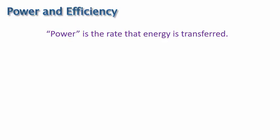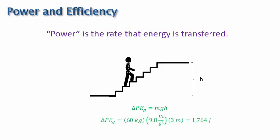To help you appreciate this definition, consider a man going up a flight of stairs. For the man to get to the top of the stairs, he must increase his gravitational potential energy by MGH. Let's say that the man has a mass of 60 kilograms and the height of the stairs is 3 meters. Then the man needs 1,764 joules of energy to reach the top of the stairs.